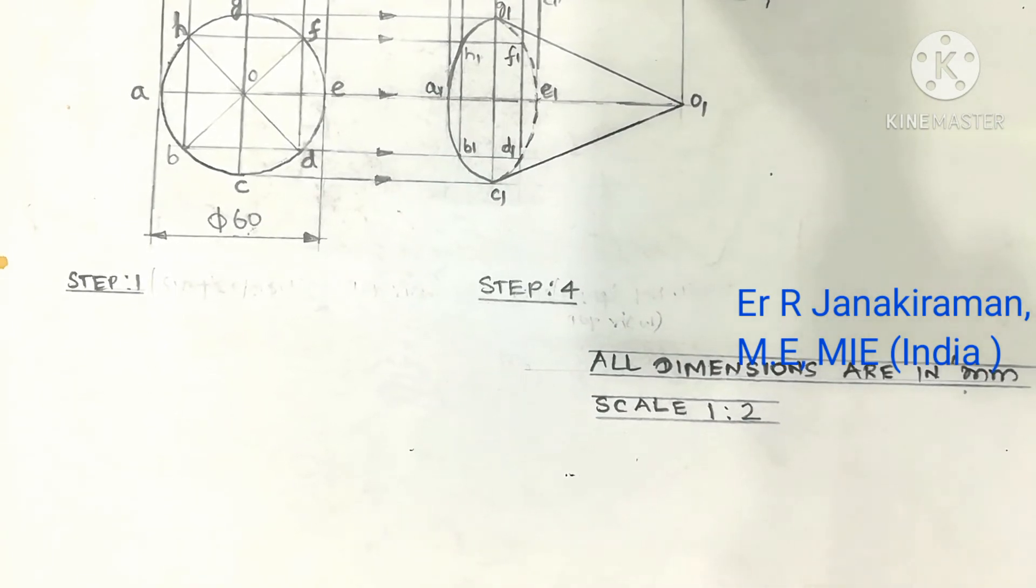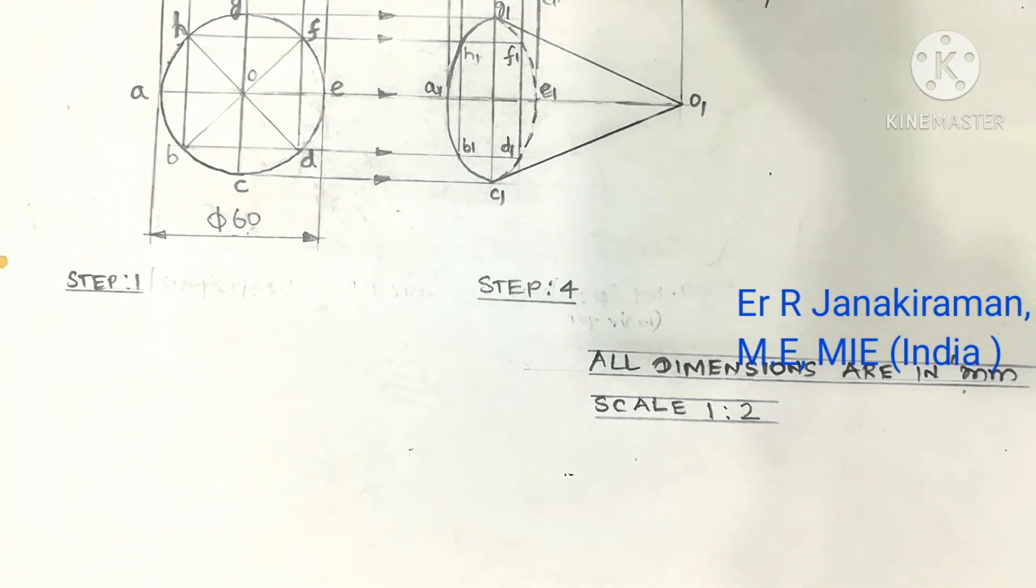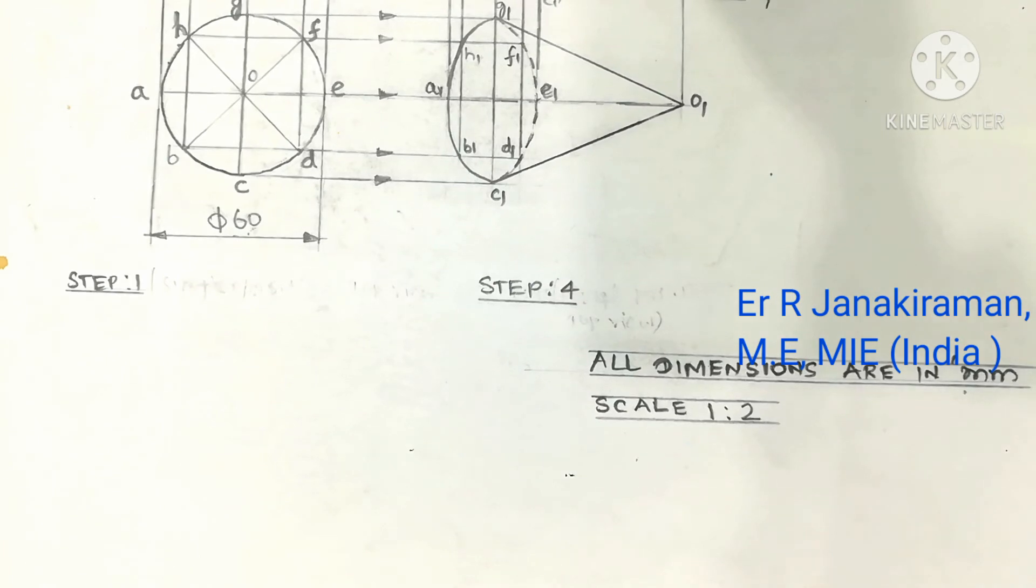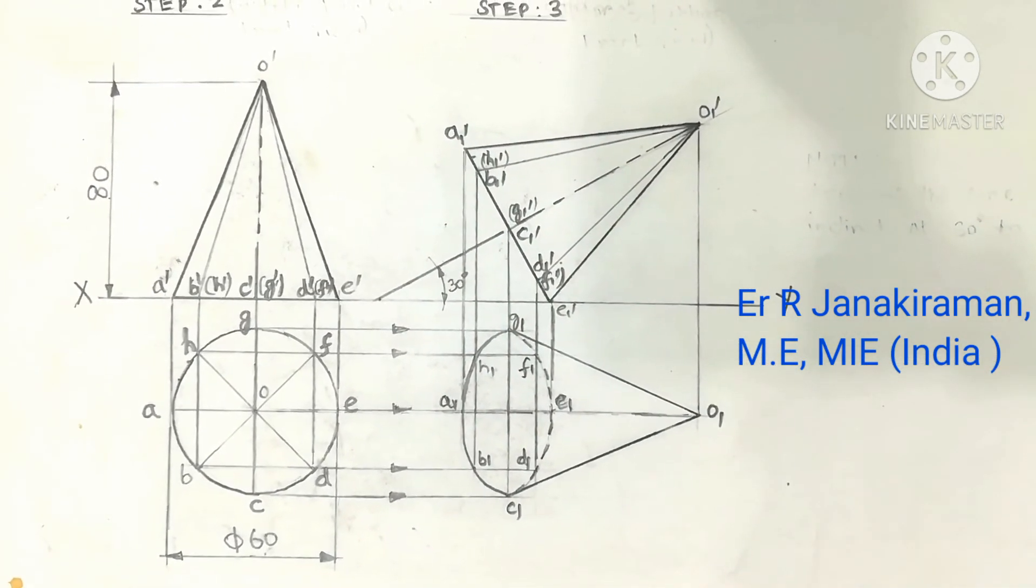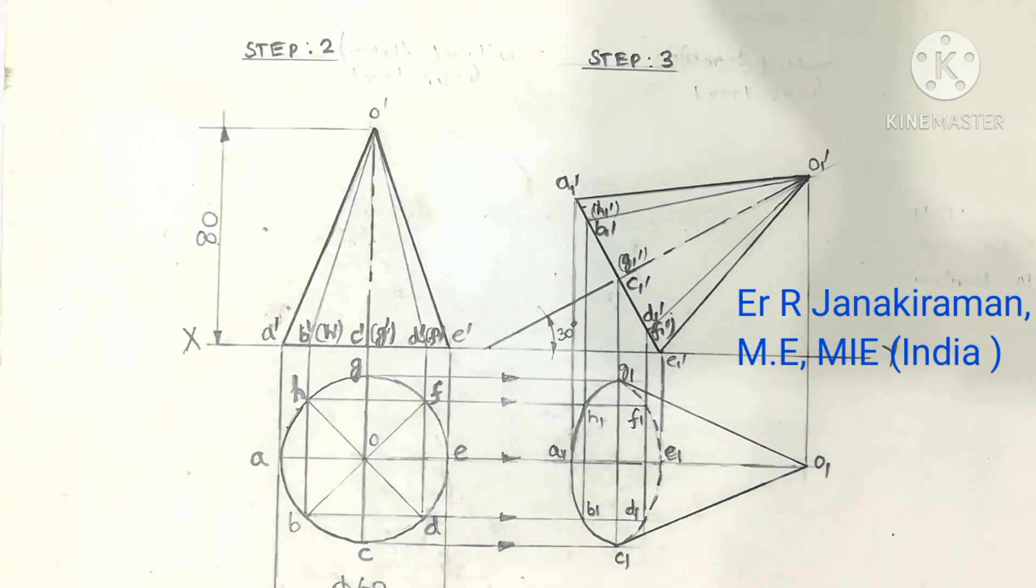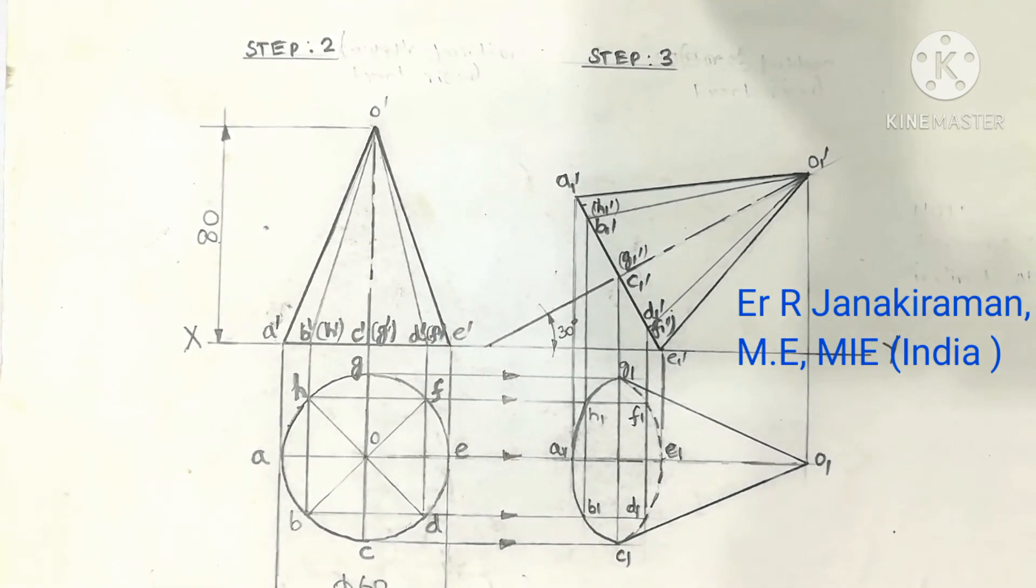I follow the reduced scale, half of the size is reduced to get a smaller diagram. You can draw it to full scale also, 1 is to 1. This is how the drawing appears when drawn on the drawing sheet.